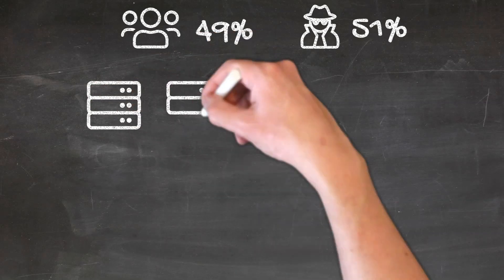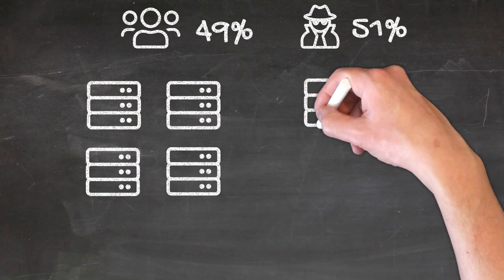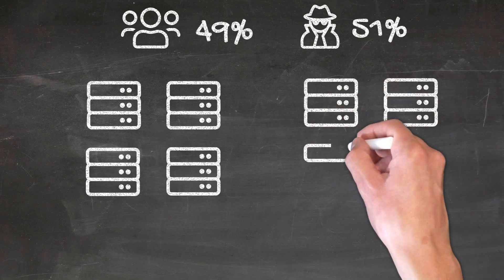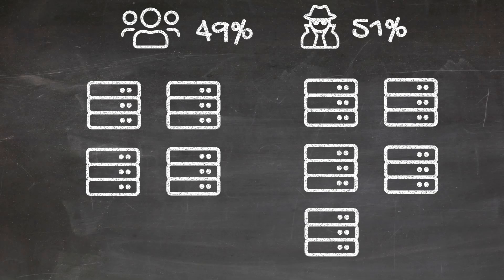In a proof-of-work system like Bitcoin, the resources are computing power. If you control more than 50% of the network's mining hash rate, you are able to create the majority of blocks and thus successfully perform an attack.